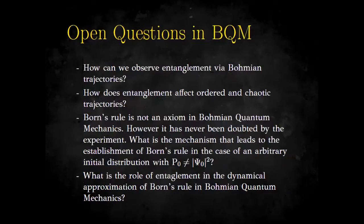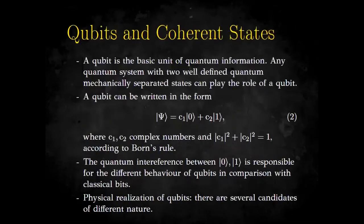Some open questions in Bohmian quantum mechanics: How can we observe entanglement via Bohmian trajectories? How does entanglement affect ordered and chaotic trajectories? Also, Born's rule is not an axiom in Bohmian quantum mechanics, yet it has never been doubted by experiment. So what is the mechanism that leads to the establishment of Born's rule for an arbitrary initial distribution — a Bohmian distribution with initial probability density which is not |Ψ₀|²? What is the role of entanglement in the dynamical approximation of Born's rule? We have made a series of works with very strong numerical background and many simulations here at ARCAM.